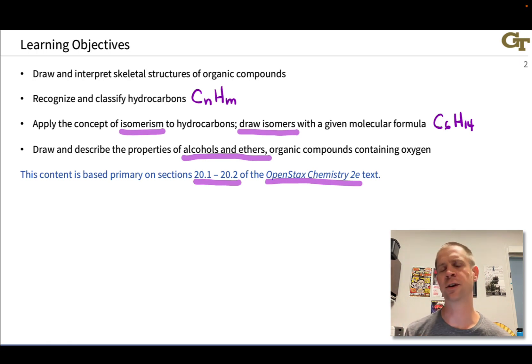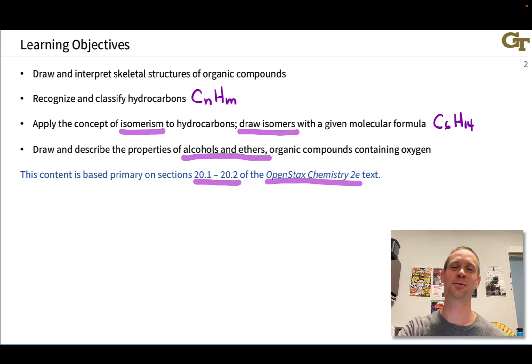And these contain oxygen, and this gives them some interesting properties, which will eventually, when you get to your organic chemistry courses, generalize out to other compounds, other classes of compounds, containing what are called heteroatoms. Heteroatoms are any atom that is not carbon or hydrogen.